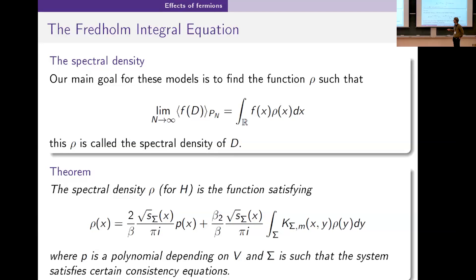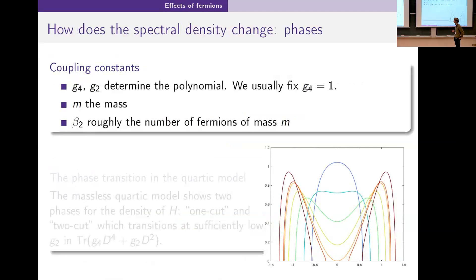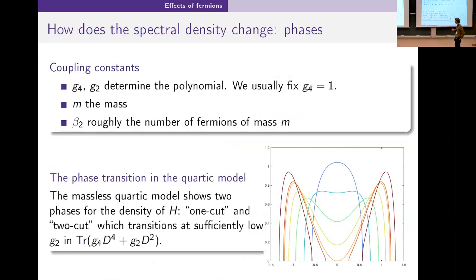Once you've determined the support, the density you're actually after satisfies this equation. Solving this analytically is not something we consider quite feasible at the moment, but computers have no problem dealing with this. So we can find the spectral density for H for certain values of the coupling constants g_4 and g_2.